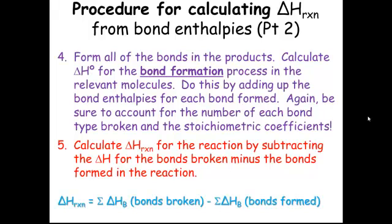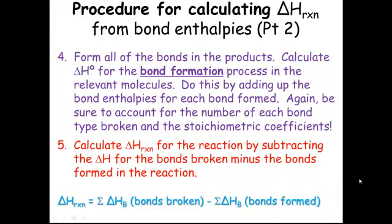We calculate delta H reaction by taking bonds broken minus bonds formed. Bonds broken will give us a positive number, and bonds formed will also be a positive number, but the negative sign takes into account that energy is released when we make those bonds. So it's always: bonds broken in the reactants minus bonds formed in the products.